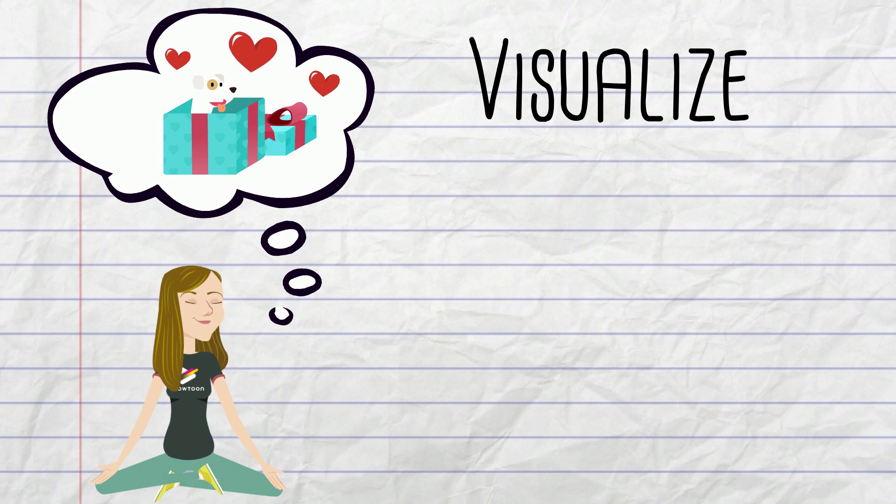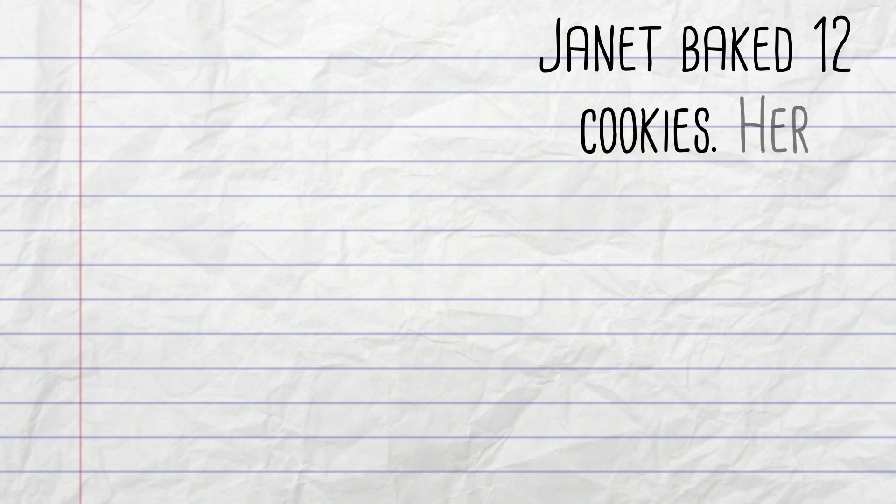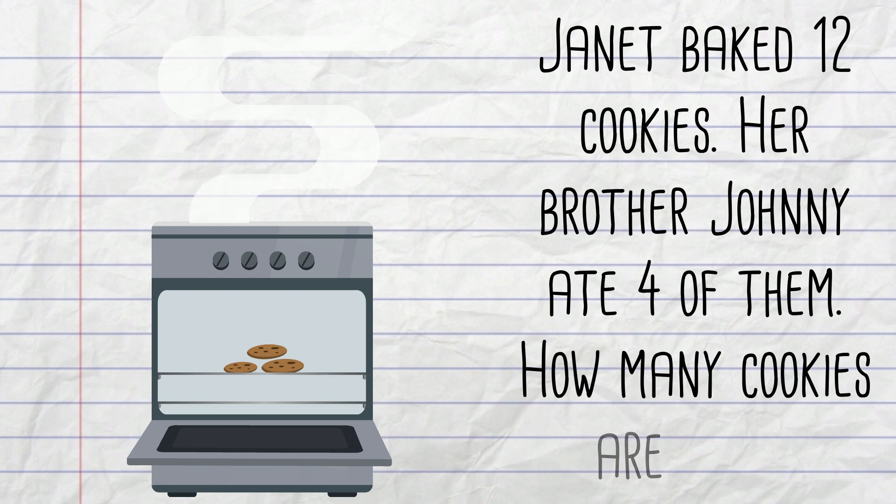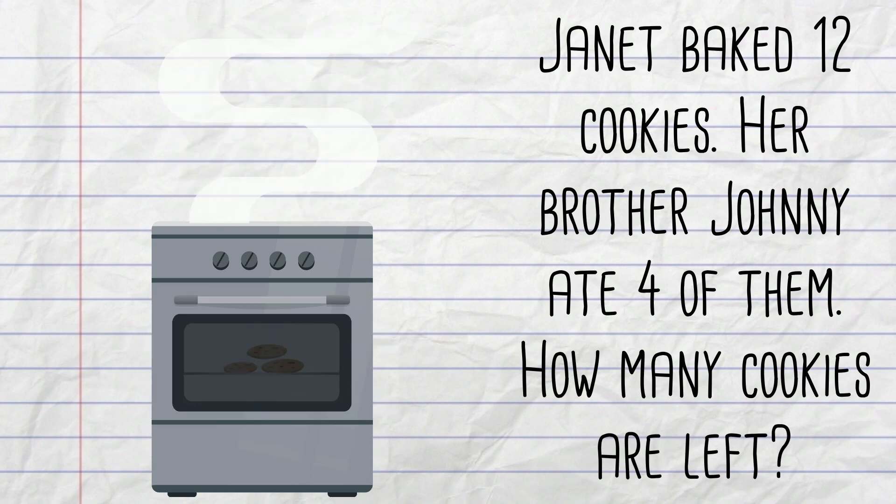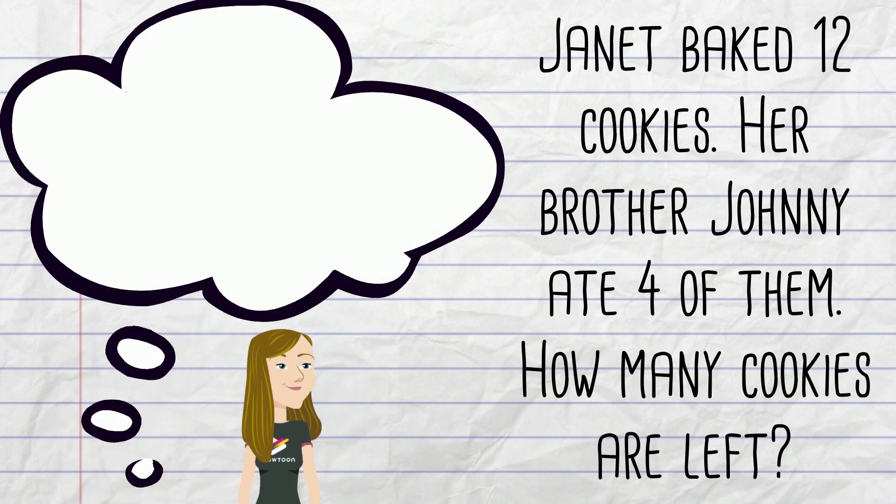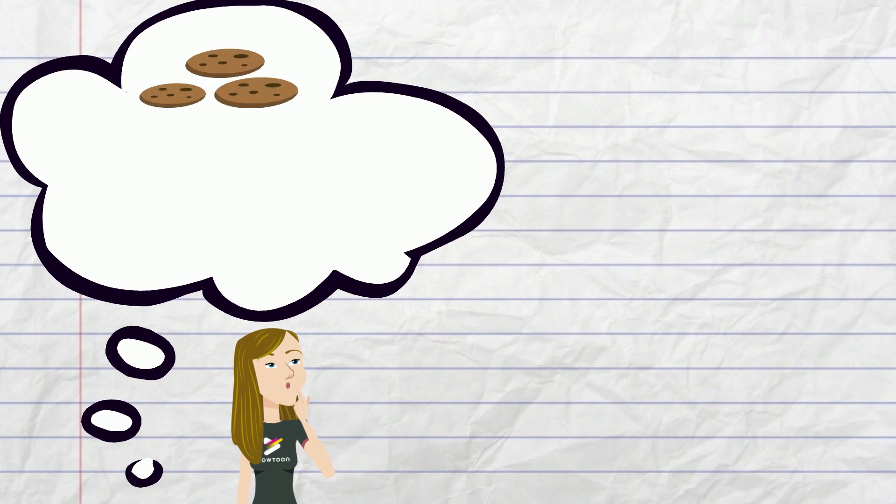For example, I have the following word problem. Janet baked 12 cookies. Her brother Johnny ate four of them. How many cookies are left? I will visualize the 12 cookies and cross out the four that were eaten by Johnny. I see eight cookies left.